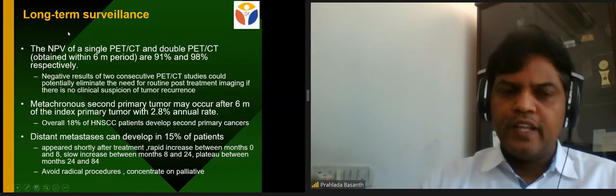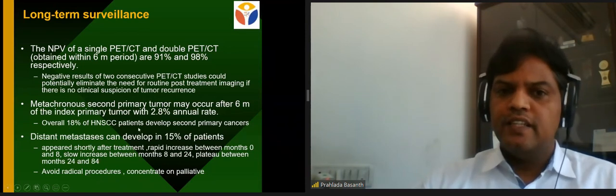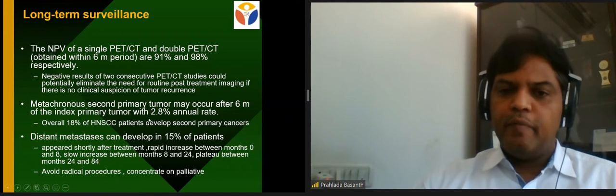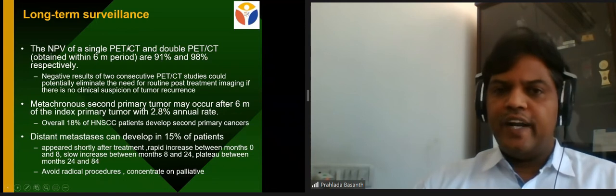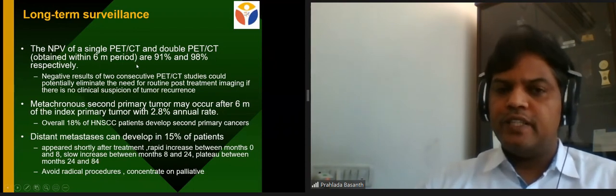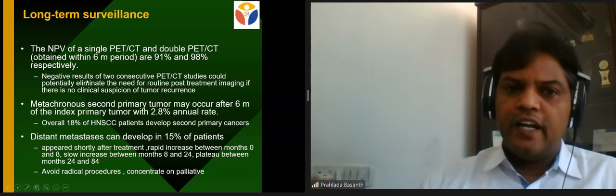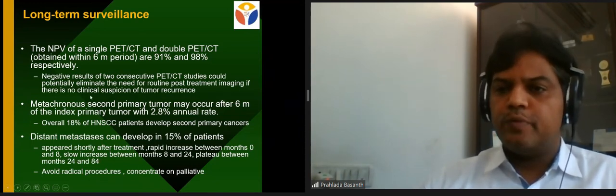In long-term surveillance, head and neck malignancies develop distant metastasis at a rate of about 15%, maximum in the first one to two years. About 18% develop second malignancies. PET/CT has very high negative predictive value — if one or two consecutive PET/CTs at six-month intervals are negative, patients have very high disease-free survival rates. Some studies suggest it can eliminate routine post-treatment imaging when there is no clinical suspicion of recurrence.